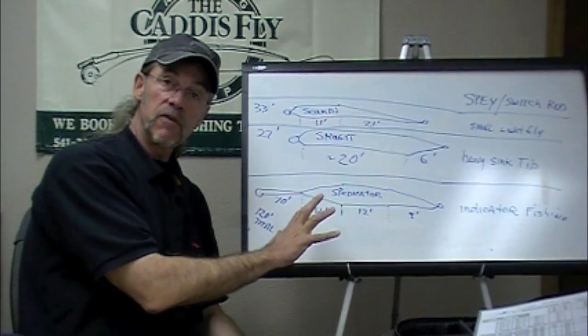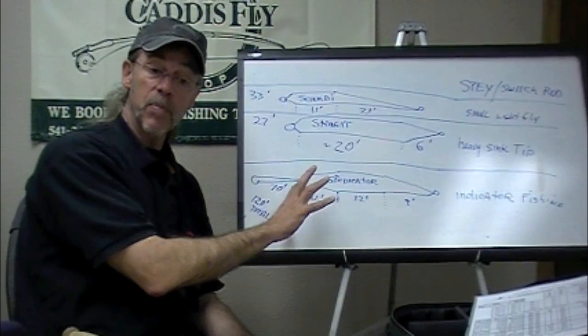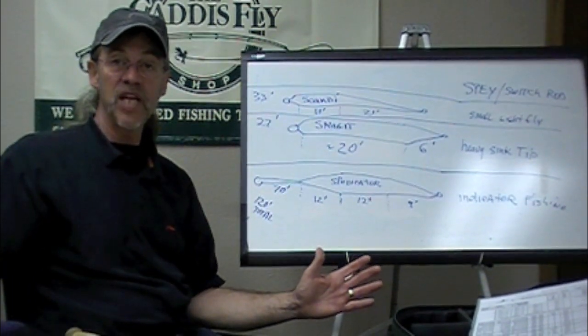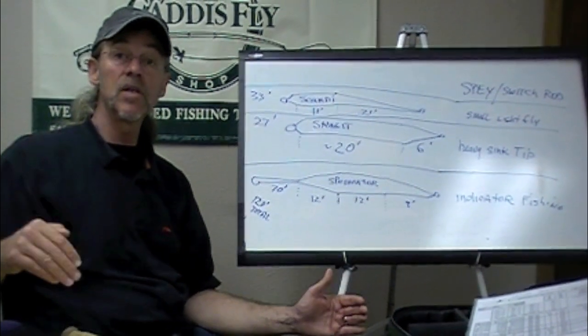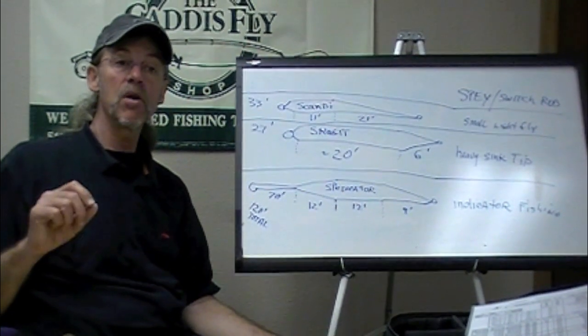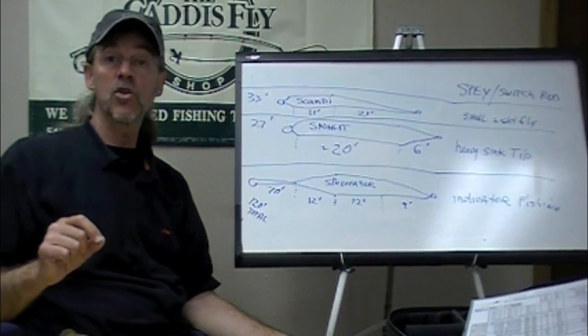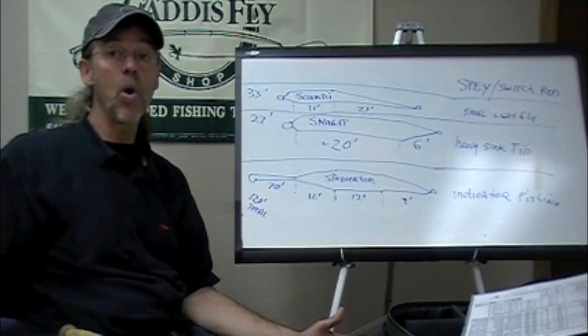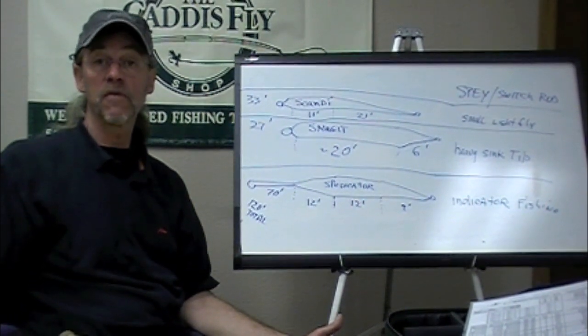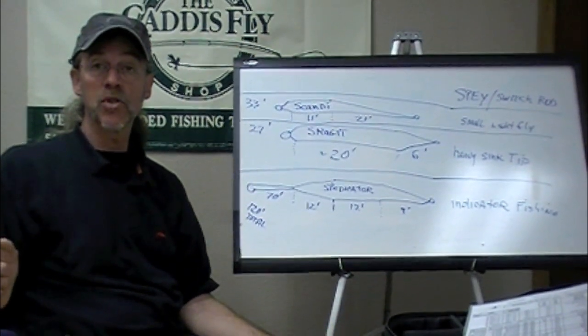A lot of the steelhead fishing that folks do with nymphs and egg patterns, they really don't have more than 6 to 8 feet of level leader under their indicator. There are rare places where it's really deep—fish may be laying in 12 feet of water—so they want a much longer level piece of tippet below their indicator. But that's uncommon.